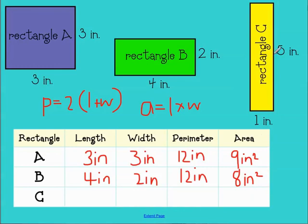And looking at rectangle C. Rectangle C has a length of 1 and a width of 5. So perimeter equals 2 times length plus width. Length plus width is 6, 2 times 6 is 12. And area equals length times width. So length times width is 1 times 5. My area of this rectangle would be 5 inches squared.